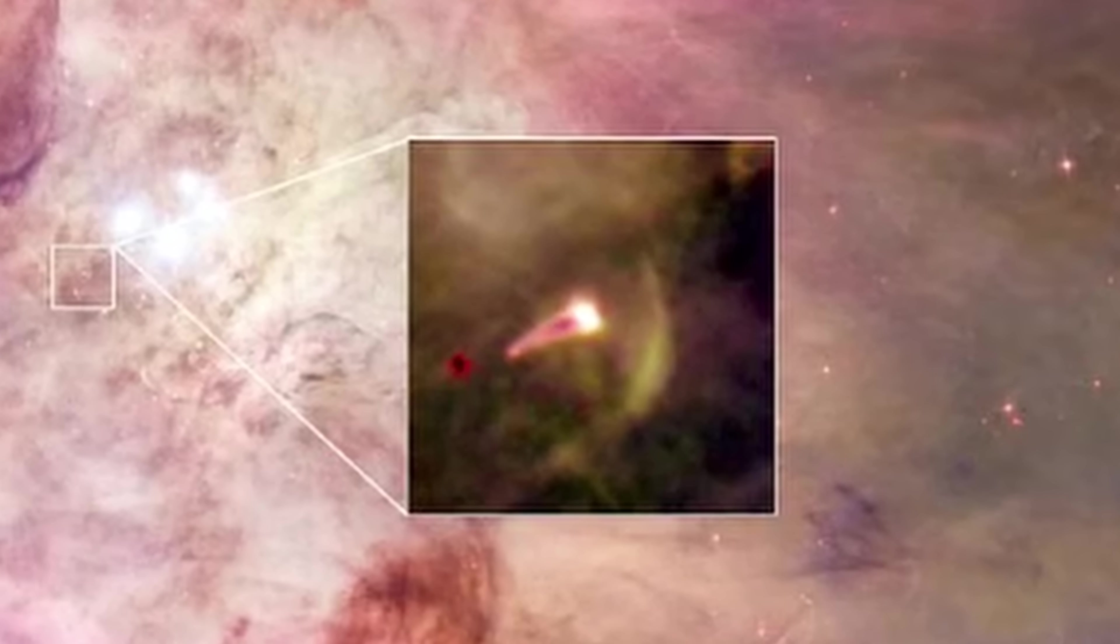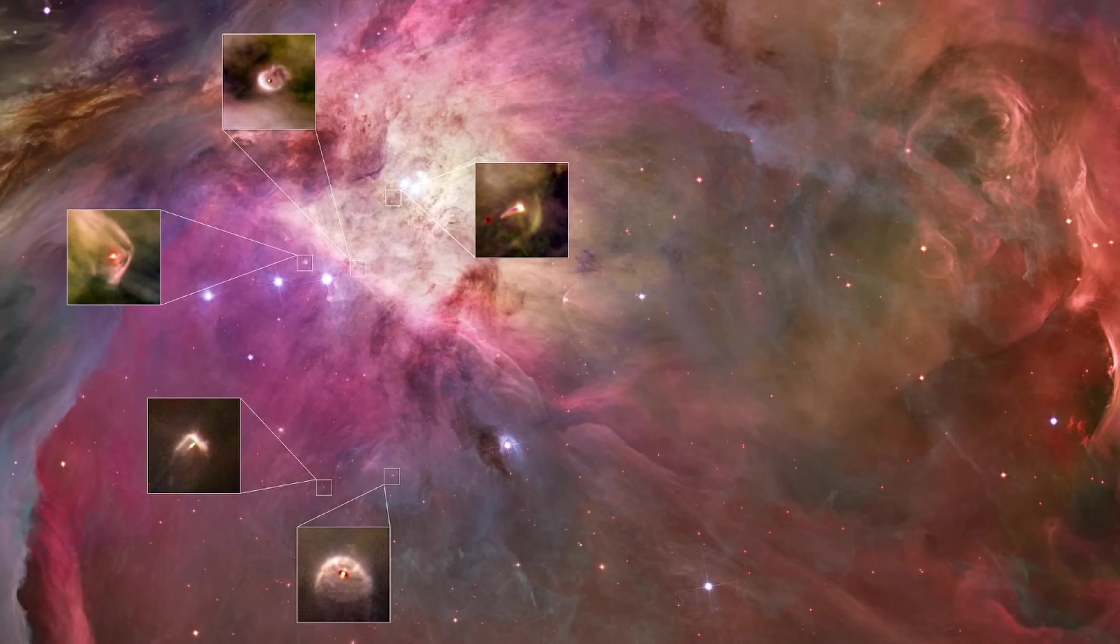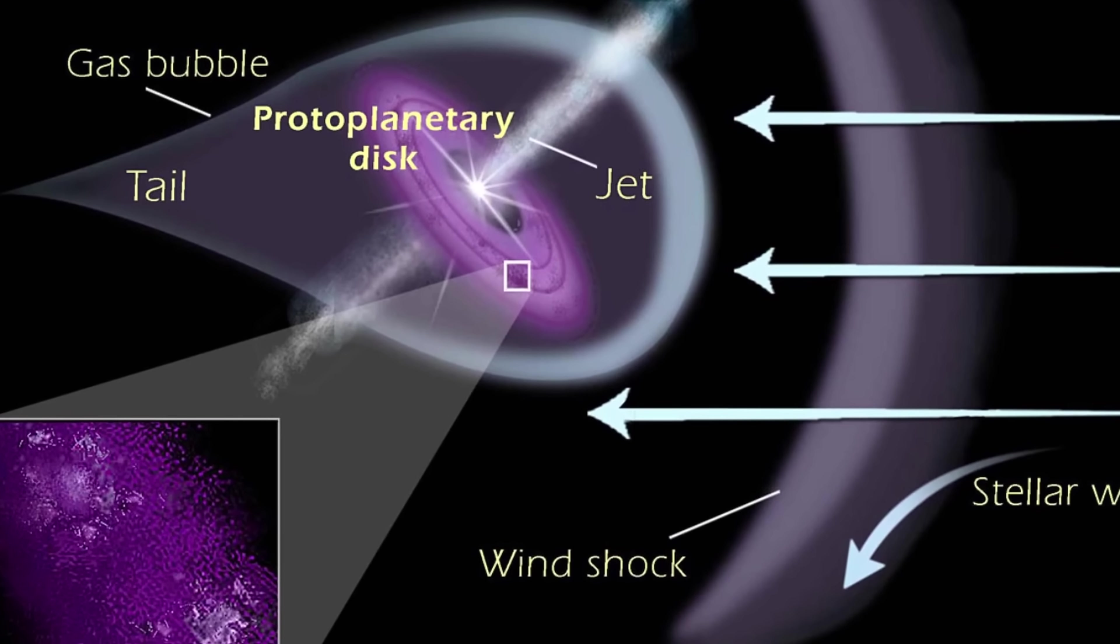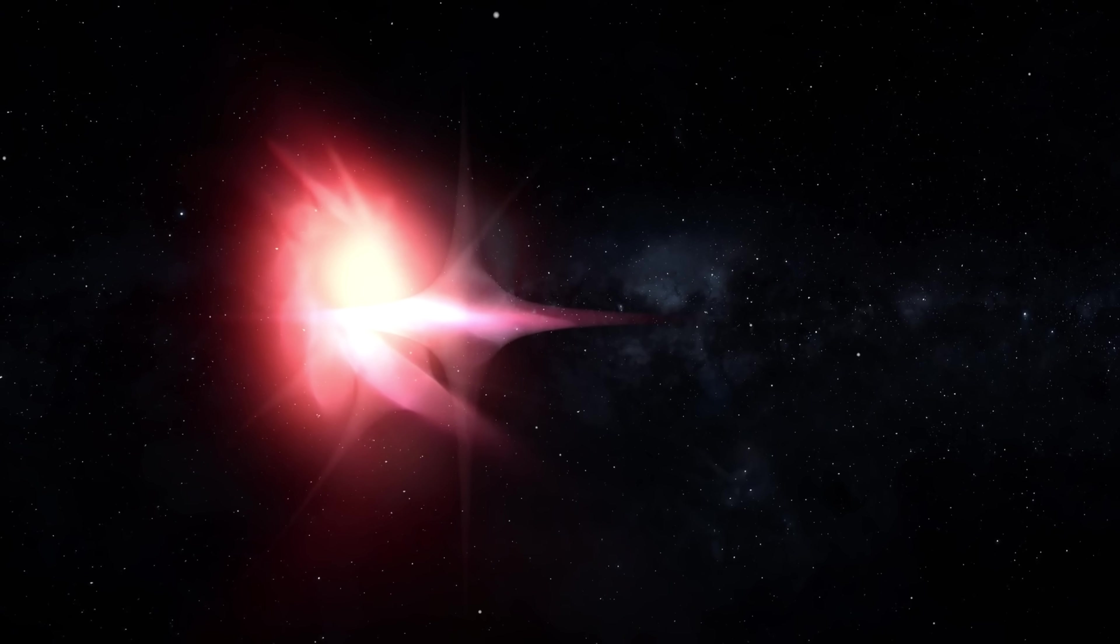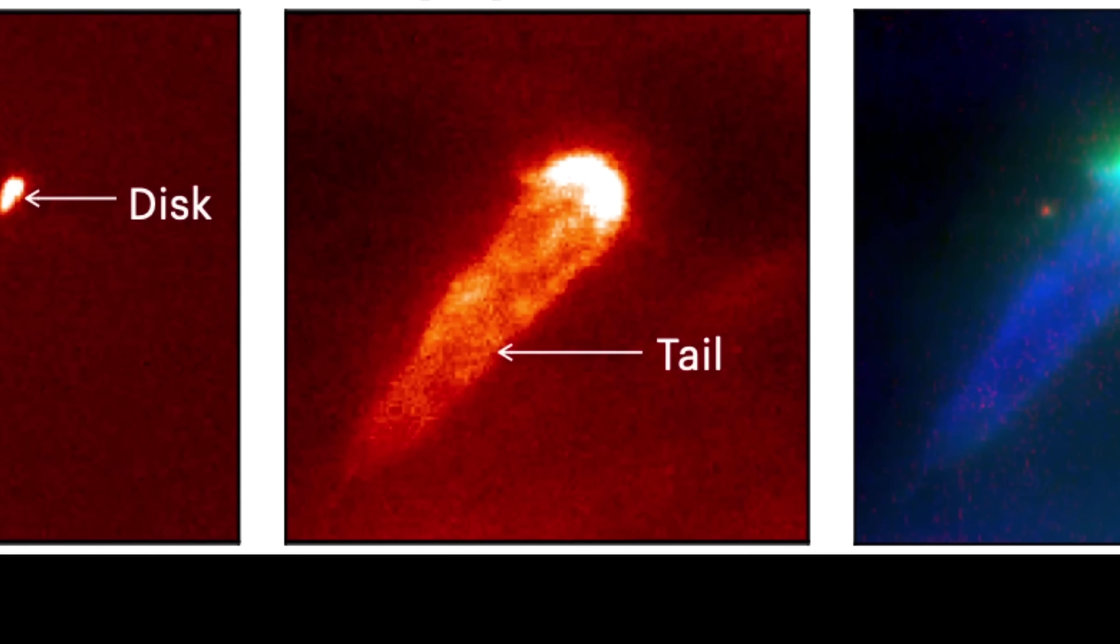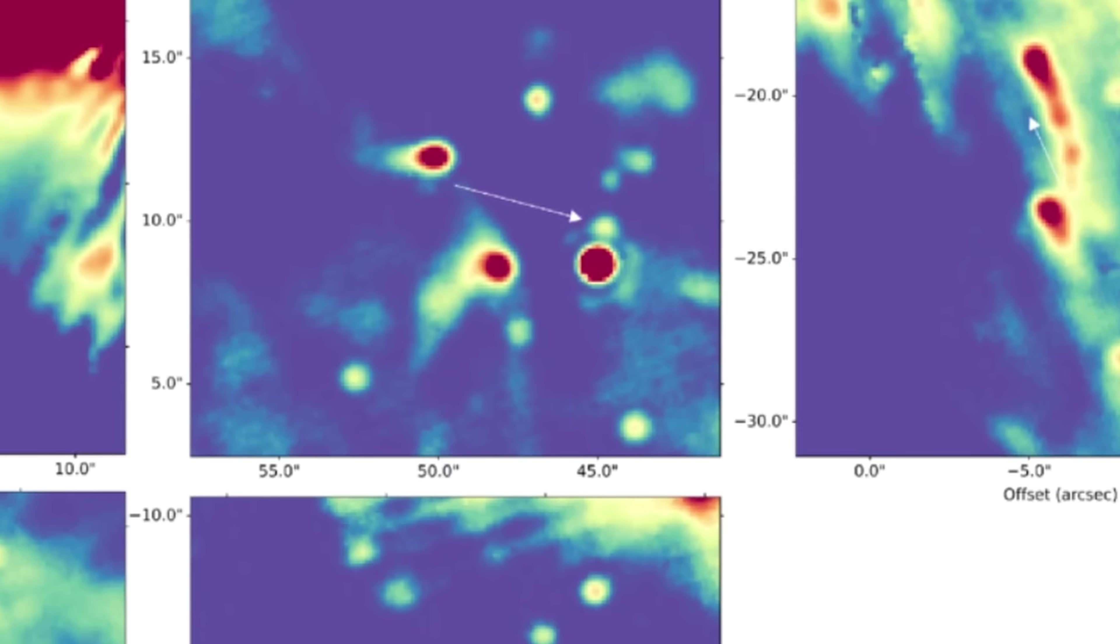Proplyds are short for ionized protoplanetary disks. Externally illuminated disks around extremely young stars, with nearly 200 of them observed in the famous Orion Nebula. And in essence, these represent really young stars, being actively reshaped by very powerful companions, and the companions that even force the formation of planetary systems. As a matter of fact, in many cases, these interactions with massive partners seem to be exceptionally important for the formation of terrestrial planets, and for the enrichment of these planets in various organic compounds.